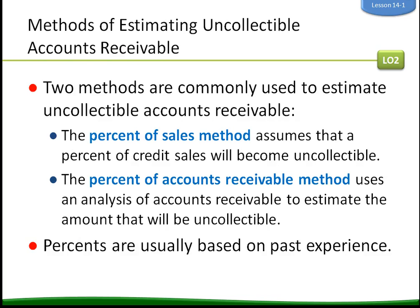There are a few methods for estimating uncollectible accounts receivable. You can either do the percent of sales method, which assumes that a percent of credit sales will become uncollectible, or you can do the percent of accounts receivable method, which uses an analysis of accounts receivable to estimate the amount that will be uncollectible. Percents are usually based on past experience. 3Green uses the percent of accounts receivable method.